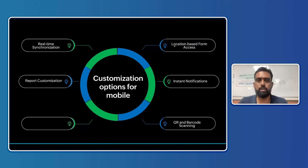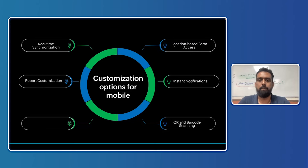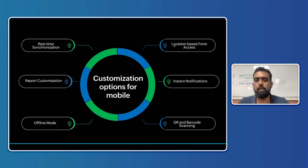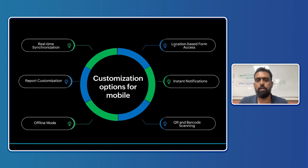QR code and barcode scanning can be used in many business use cases — scan a code and populate the associated fields immediately. Finally, what makes a Zoho Creator mobile application so robust is offline mode and offline capabilities. In many locations without network connectivity, you can still use the application, fill and submit forms, and the data gets stored until connectivity is restored.